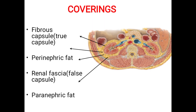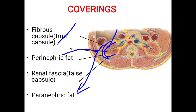Looking at the transverse section diagram: the kidney is covered by the fibrous capsule, then the yellow-colored perinephric fat, then the renal fascia, and outermost is the paranephric fat, which is more abundant posteriorly and acts as a cushion.